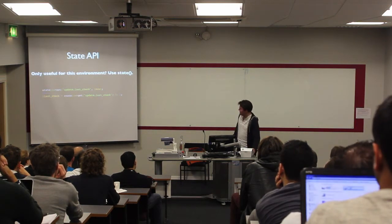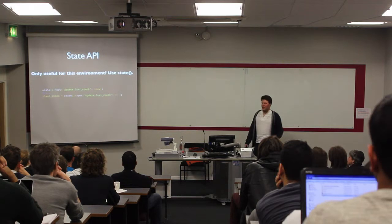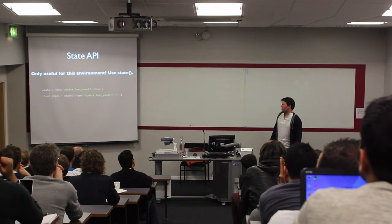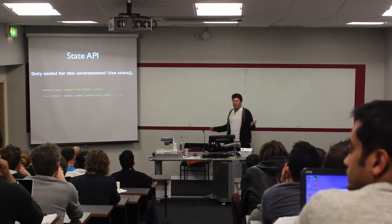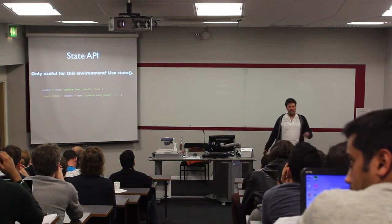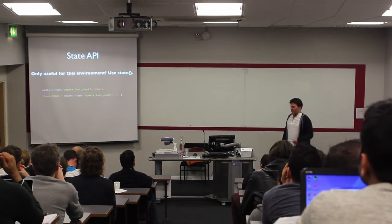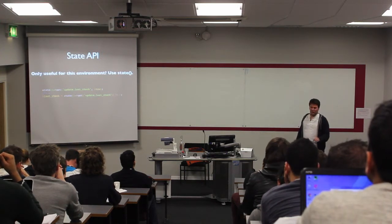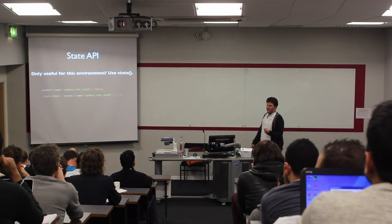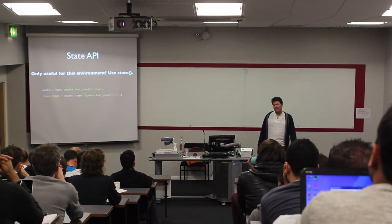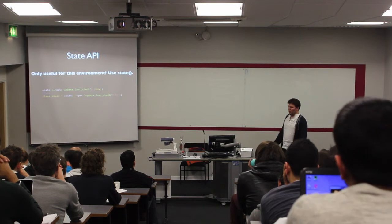I've just been given the five-minute warning, so moving on. The State API: as I mentioned, state is for saving things that are only useful for the current environment. A classic example is update_last_check or cron_last_run. You wouldn't want to deploy when your site last checked for updates. Things that you're going to read and write on many requests probably should not be in configuration. Configuration shouldn't be changing just because a user requests a page — it's expensive to write to, and if you have to write something on a lot of page requests, you probably want to think about what you're doing.